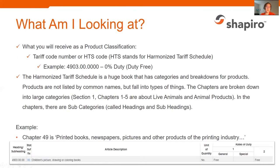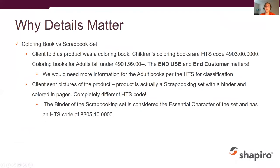Looking at the subheadings, 4903.00.0000 is 'children's picture, drawing, or coloring books,' and you can see it is duty free on the right-hand side. The column 1 and column 2 rates can be very important and are part of the reason we recommend talking to a customs broker and compliance department — special regulations can apply depending on where the product is coming from. So why do the details matter?